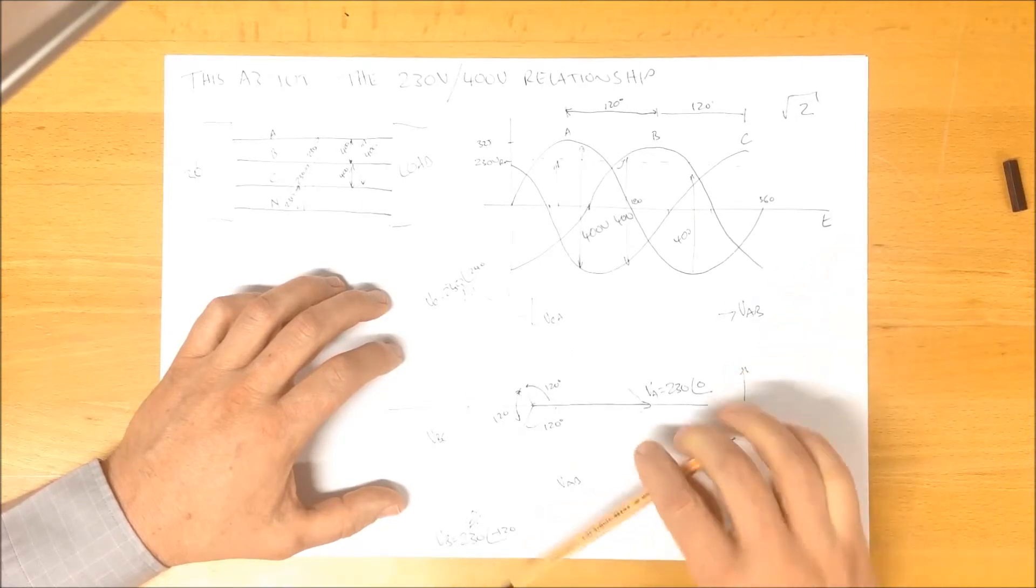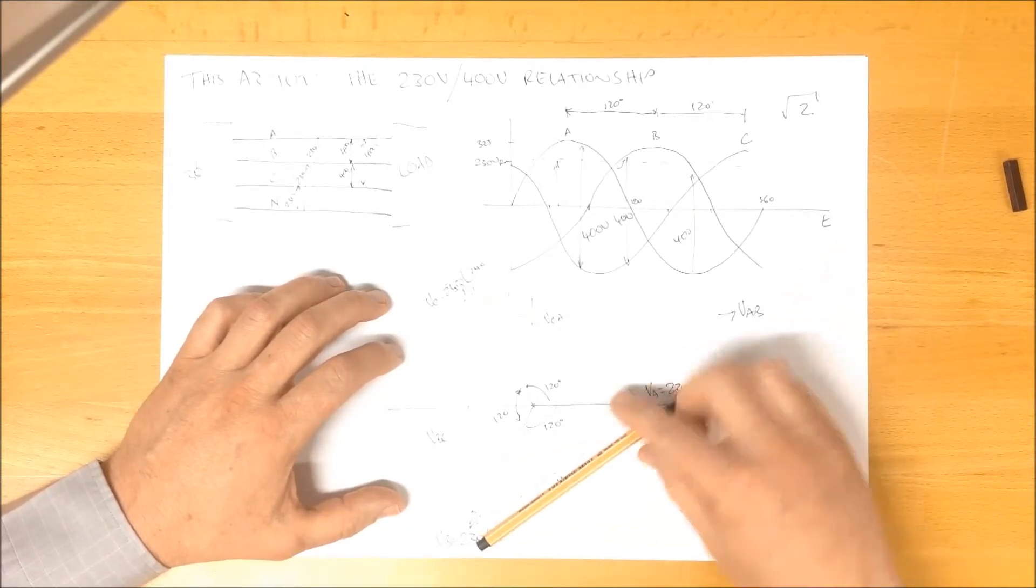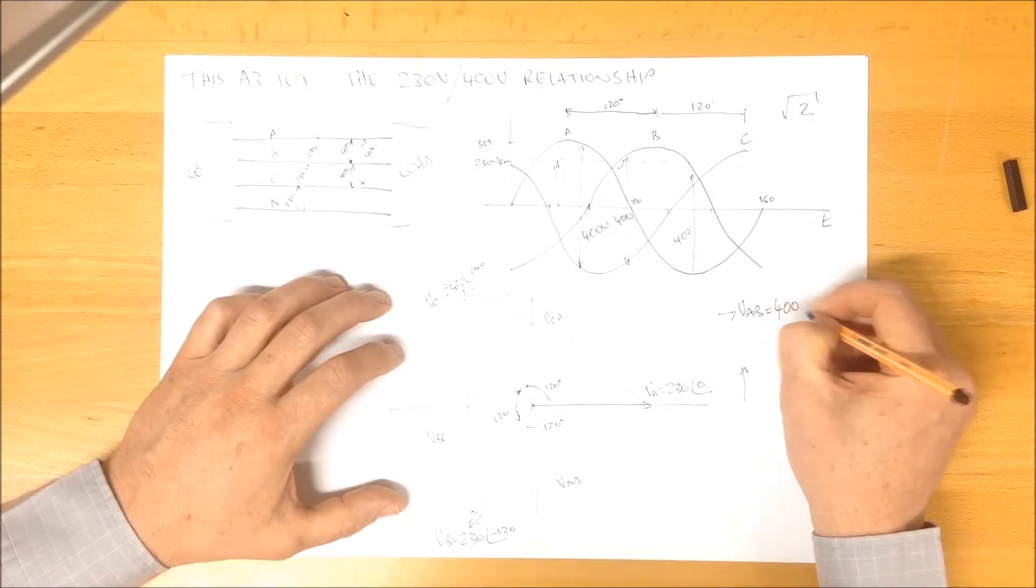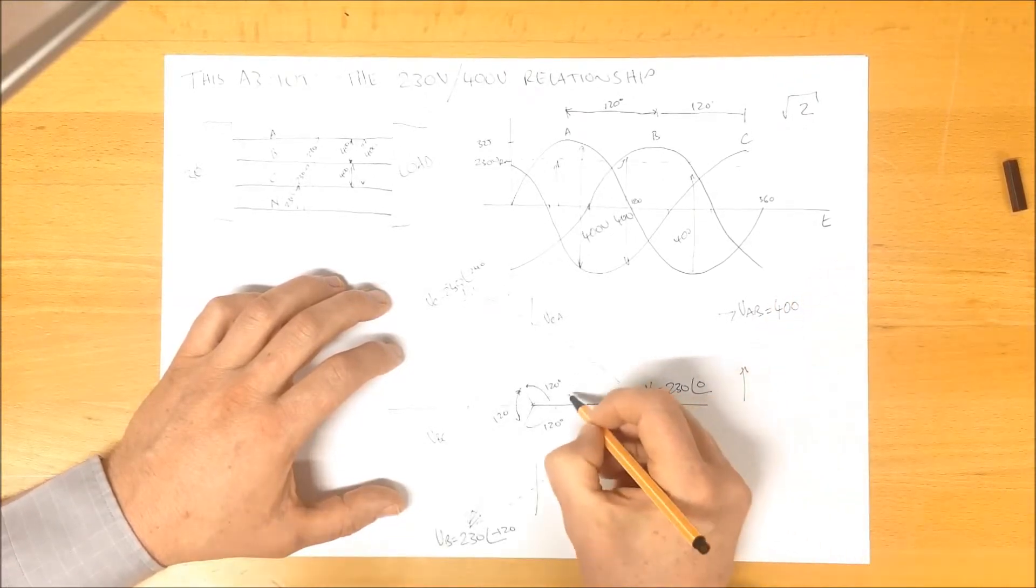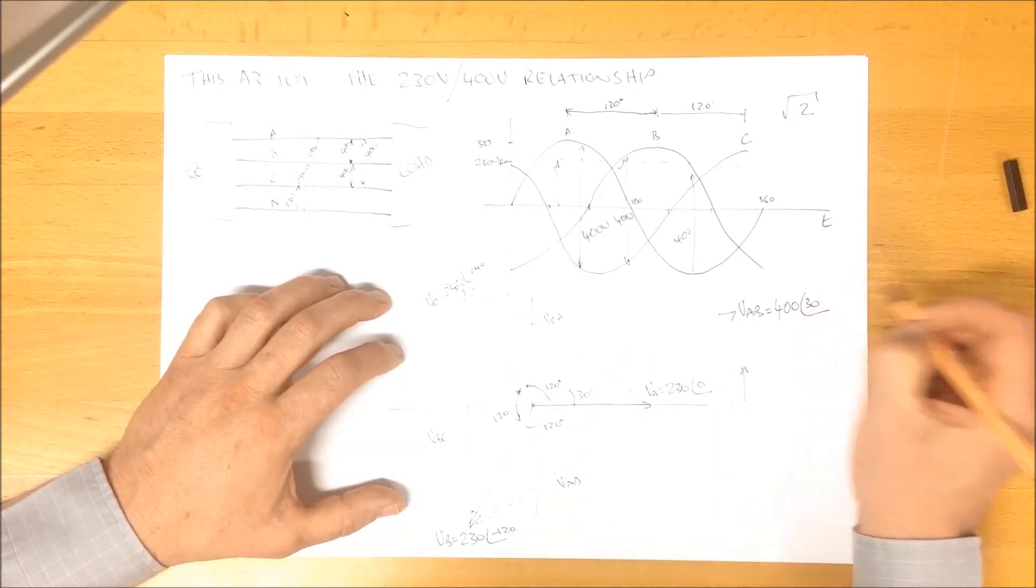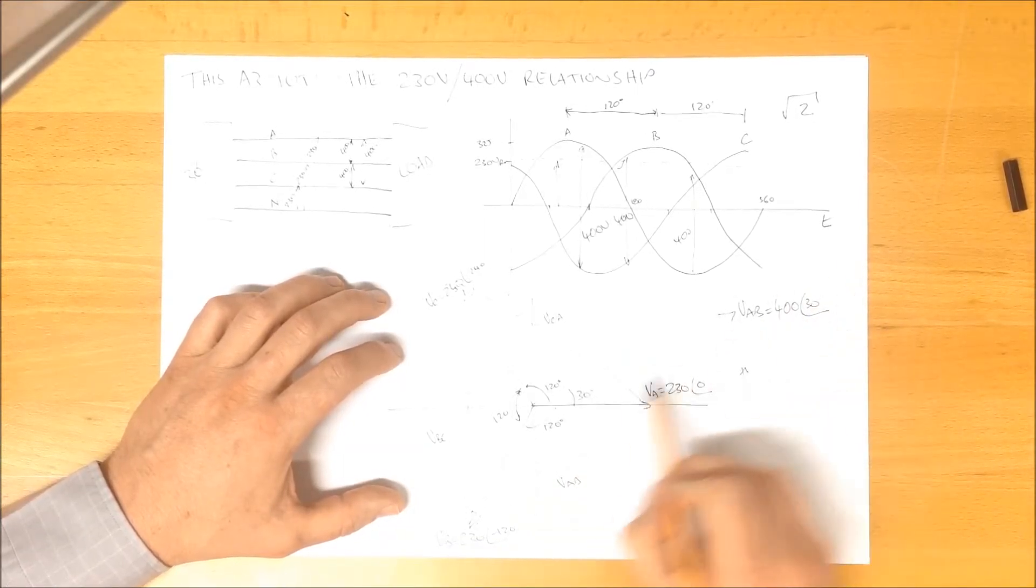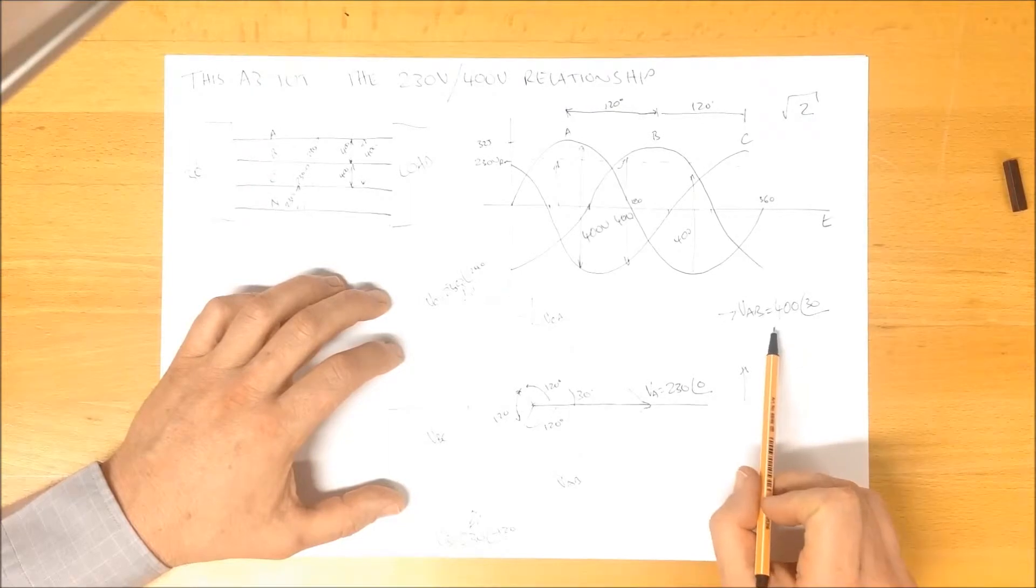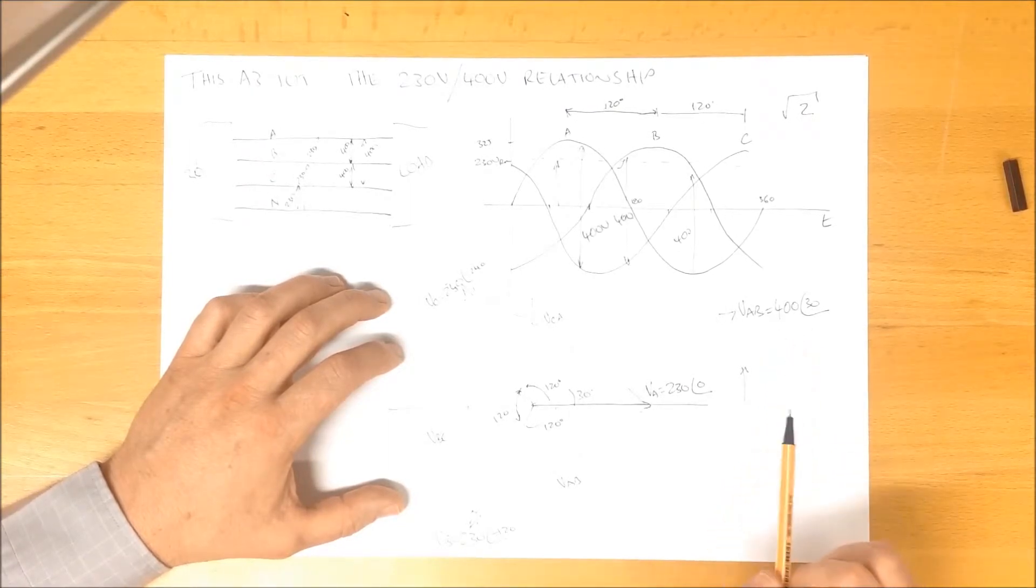And from measurement, if that had been done on graph paper, we would see that that is 400 volts. And this angle here is 30 degrees. This is where the 400 volt, 30 degree reference comes from.